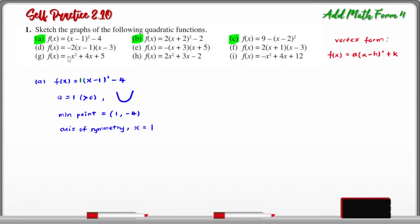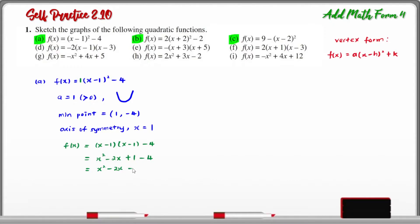Next, I'm going to expand this quadratic function to change it from vertex form to general form. Expanding (x - 1)², we get x² - 2x + 1 - 4, which simplifies to x² - 2x - 3. This is the general form.